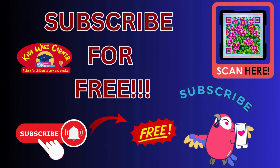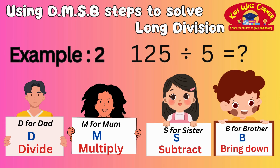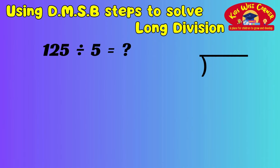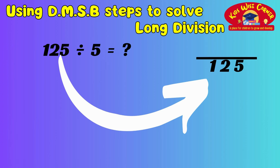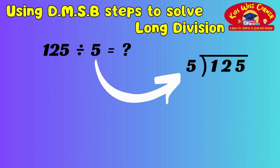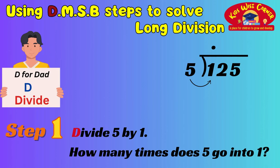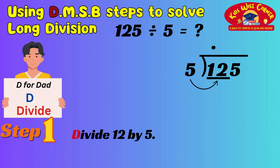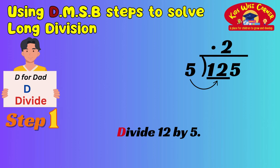Let's try another example: 125 divided by 5. Follow along with me. Use the DMSB steps to solve long division. Set up the division bracket — write the number 125 inside the division bracket and 5 outside. Step 1 — D for divide: look at the first digit of 125, which is 1. Ask yourself, how many times does 5 go into 1? It doesn't, so we look at the first 2 digits, which is 12. How many times does 5 go into 12? It goes 2 times. Write 2 above the 2.